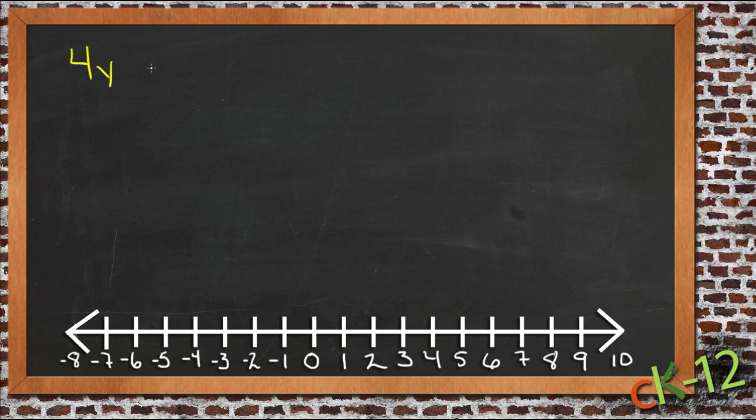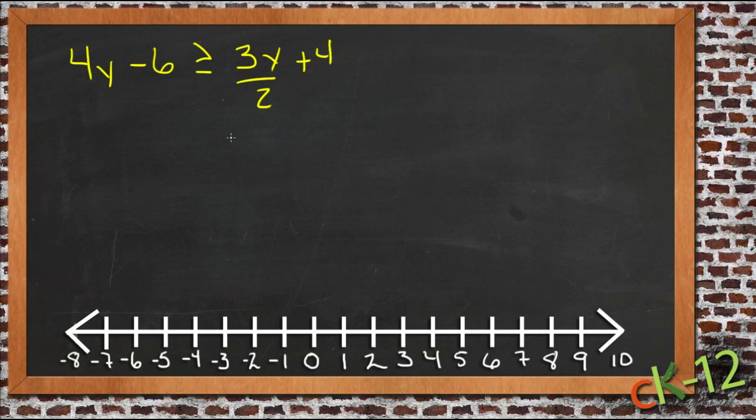Suppose we had 4y minus 6 is greater than or equal to 3y over 2 plus 4. So we need to get all our variables on one side, all our numbers on the other, just like we would if this was an equation.